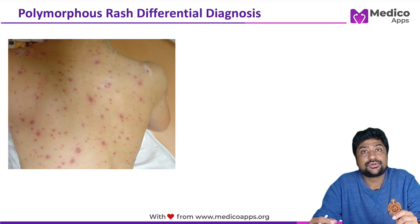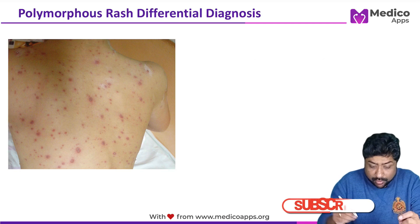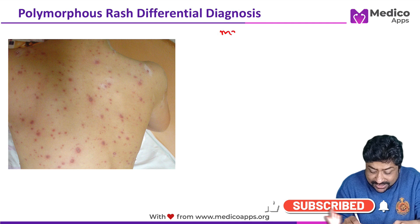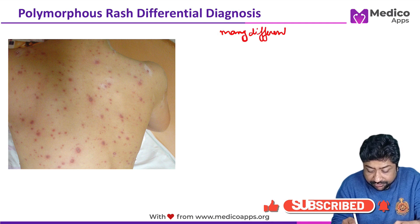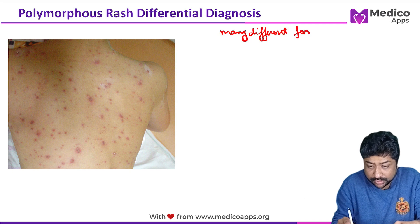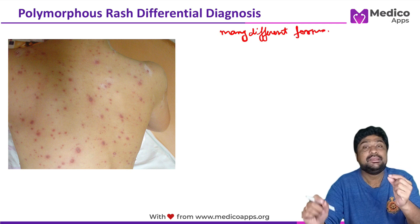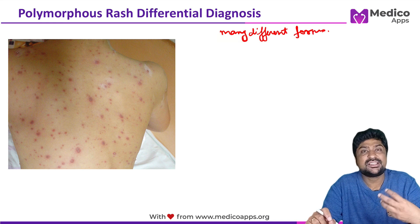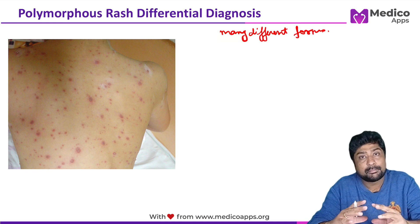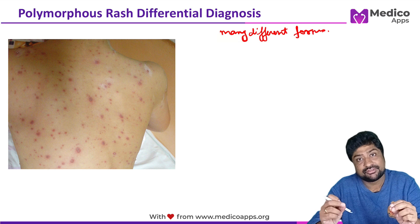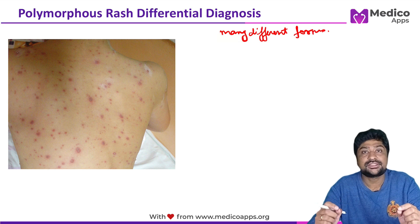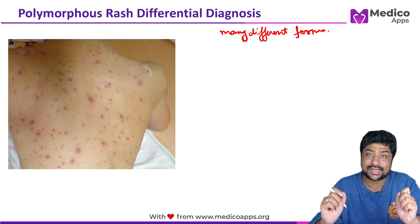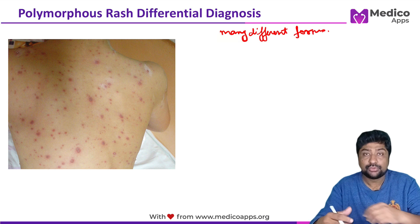First, what is a polymorphous rash? A polymorphous rash is a rash that has many different forms — it can be tiny bumps, raised areas, or blisters and vesicles. So multiple different forms of skin rashes are present at the same time, which is called a polymorphous rash.